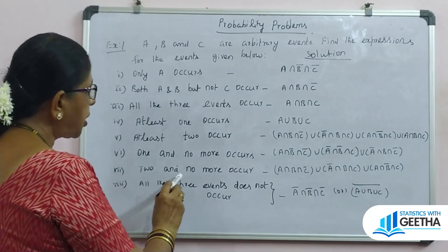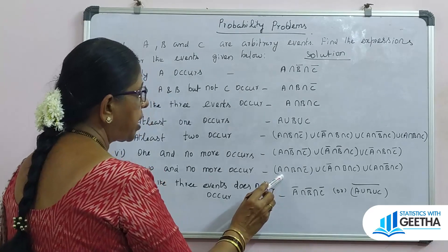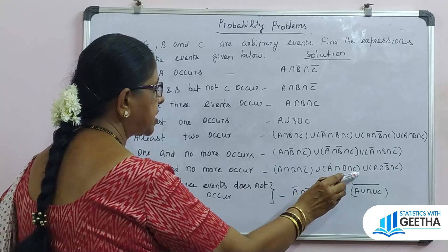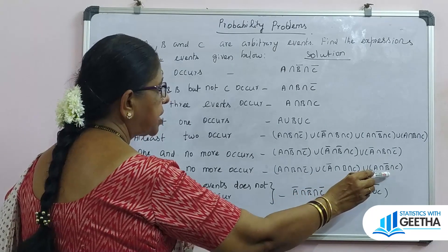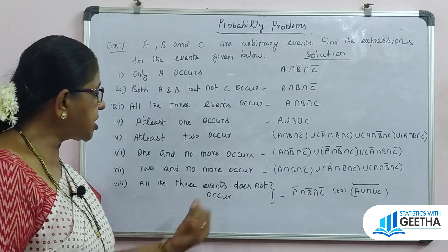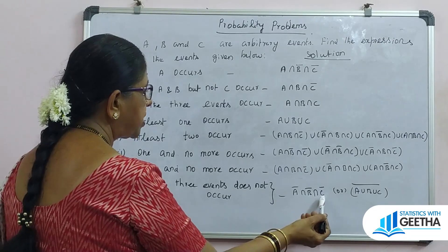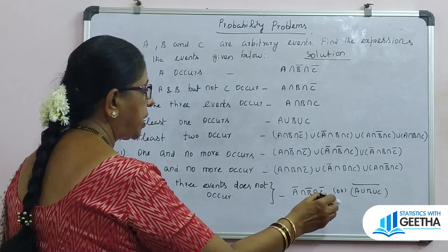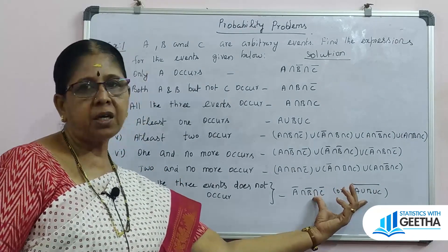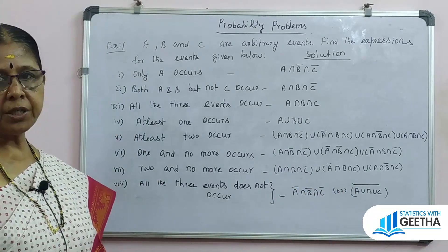Two and no more occur: (A intersection B intersection C complement) union (A complement intersection B intersection C) union (A intersection B complement intersection C). All three events do not occur: A complement intersection B complement intersection C complement, which equals (A union B union C) complement.